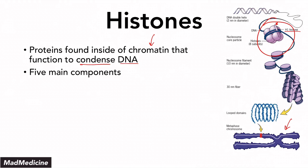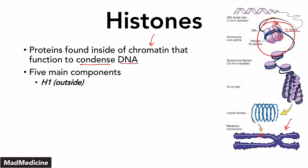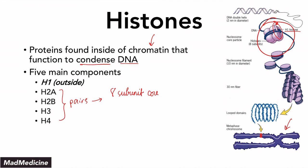There are five main components of histones. The first and most important is the H1 histone, which is on the outside — you can see this in the photo as the cylindrical component located externally to the actual histone core. Then you have the H2A, H2B, H3, and H4 subunits. All of these are located in pairs, giving you a nine-subunit structure overall.